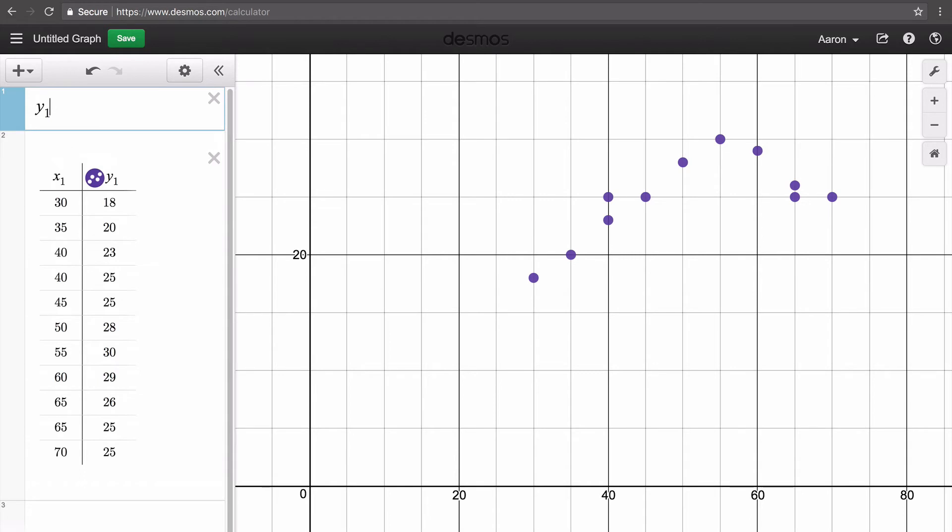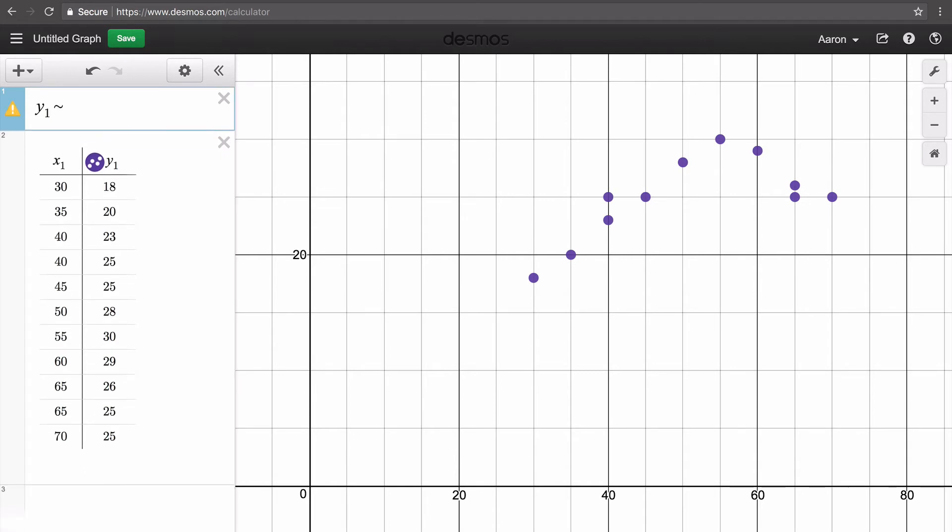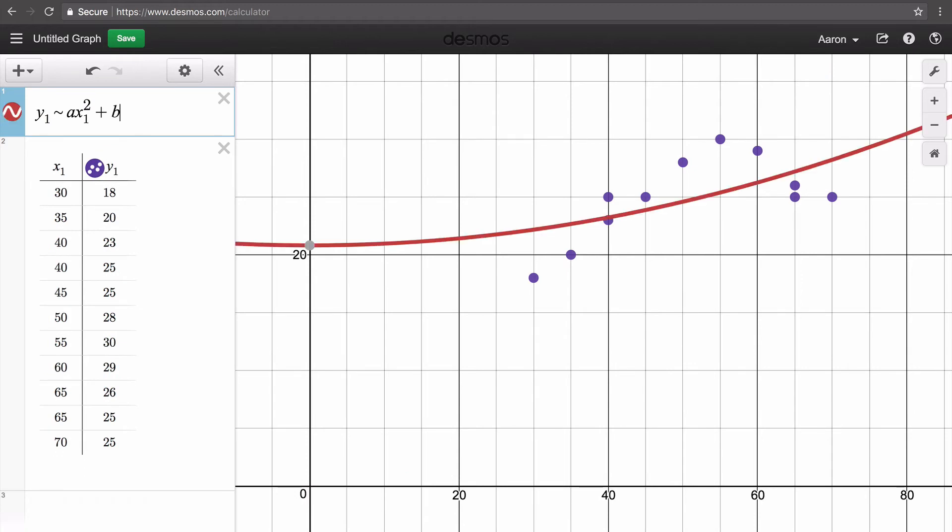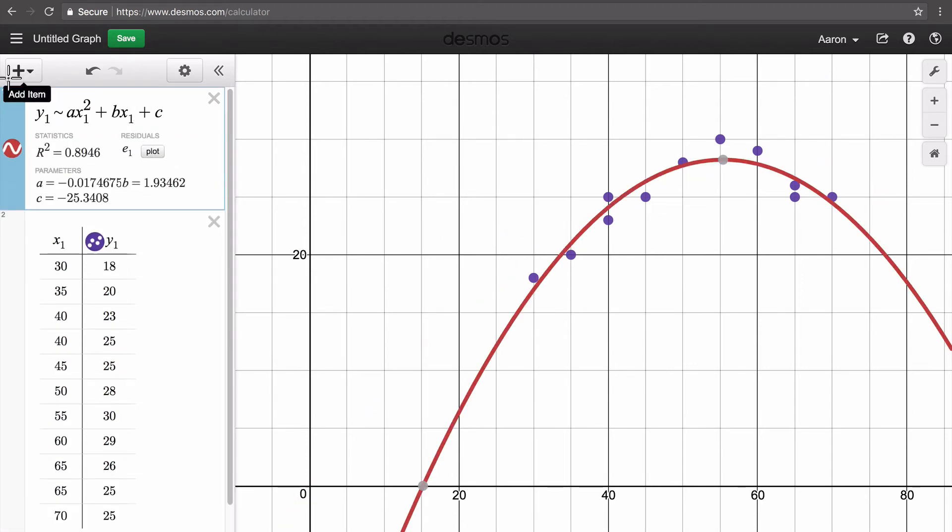So for the standard form equation, it's y sub 1 is about ax sub 1 squared plus bx sub 1 plus c. So you just type in your equation here, and it has graphed our quadratic.